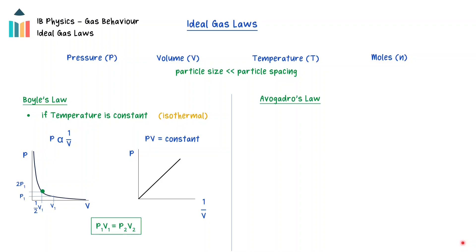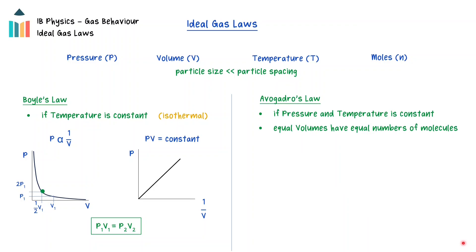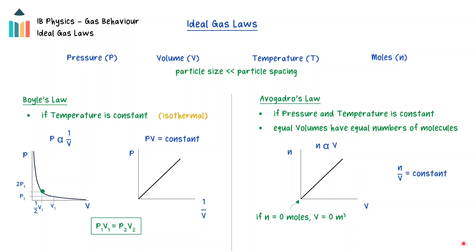Avogadro's law states that equal volumes of different gases under the same conditions of temperature and pressure contain an equal number of molecules. The amount of moles of an ideal gas under these conditions is proportional to the volume of the gas. Graphically, the relationship between the number of moles and the volume of an ideal gas will be linear, with the line passing through the origin. This represents that there will be no volume if the number of particles is zero. This can also be expressed as the ratio of the number of moles to the volume is equal to a constant.